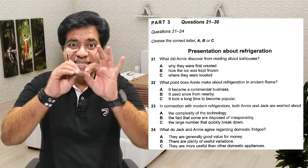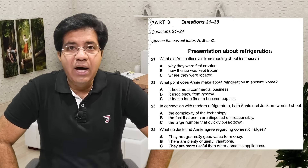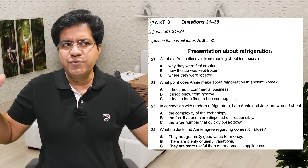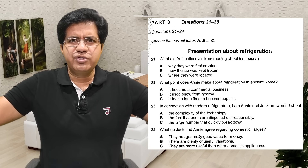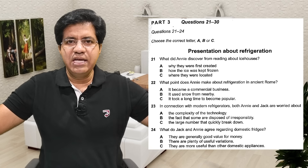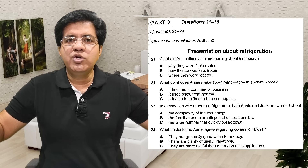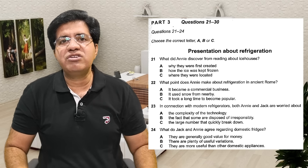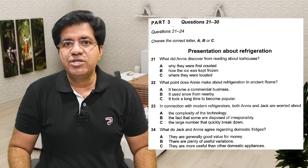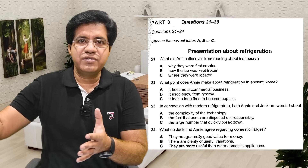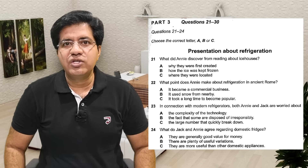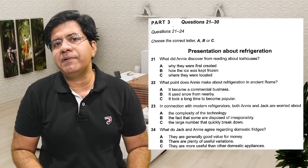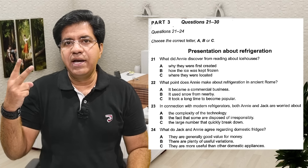Let's see questions 21 to 24: choose the correct letter A, B, C. The title of the presentation is 'Presentation about Refrigeration.' Switch on your imagination — imagine one person is delivering a presentation at university, and the topic is refrigeration. Refrigeration covers things like refrigerators, fridges, and all that. Now, in multiple choice, two things are important: number one the question, number two the statements.